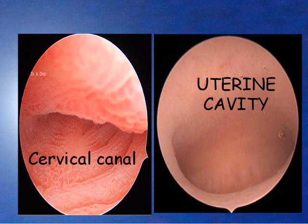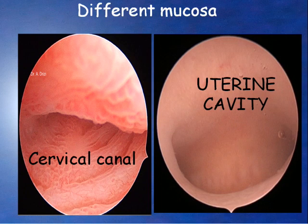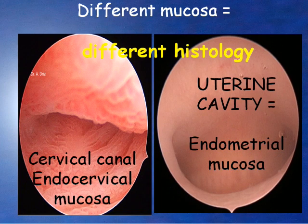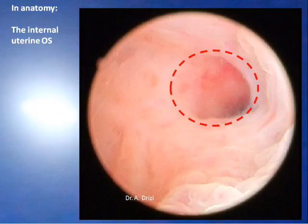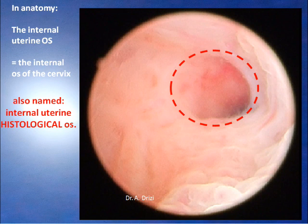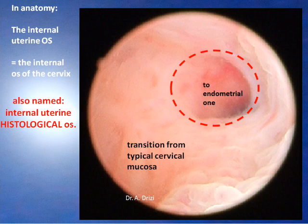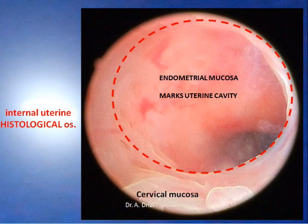The cervical canal and uterine cavity are aligned with different mucosa: endocervical mucosa for the cervix and an endometrial one for the uterine cavity — different mucosa, different histology. The internal uterine ostium, or internal ostium of the cervix, is also termed the internal uterine histological ostium, because it marks the transition from typical cervical mucosa to endometrial mucosa, which marks the uterine cavity.